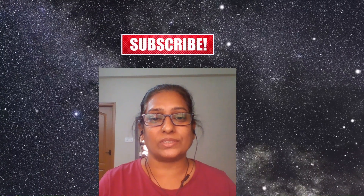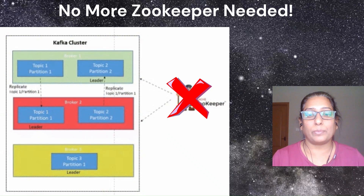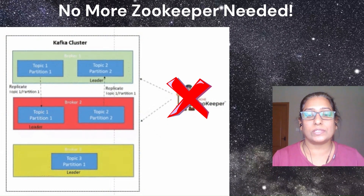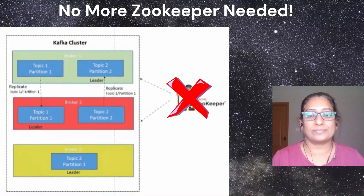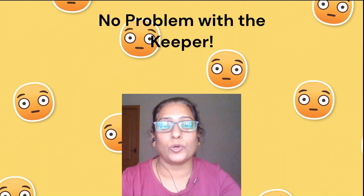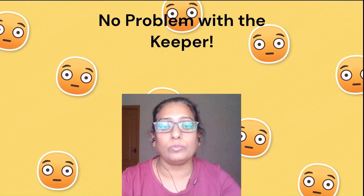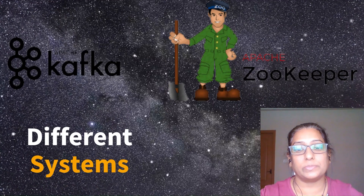You may ask, what's wrong if the metadata is stored in ZooKeeper — why does Kafka have plans to get rid of it? The problem was not at all with ZooKeeper's usage itself; ZooKeeper is a fine solution and it did its intended job really well. The problem was having an external system for metadata management. From an operator or sys admin's perspective, Apache Kafka and Apache ZooKeeper are two different systems to manage, learn, and configure.